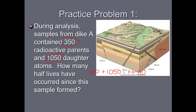Our current situation shows 350 are still parents and 1050 have turned into daughters. To figure out how many half-lives that took, we start with 1400 atoms. In the first radioactive decay, half of them stayed parents — so 700 stayed parents and 700 turned into daughters. But that's not our current situation because we only have 350 parents right now, which means there was more than one half-life.